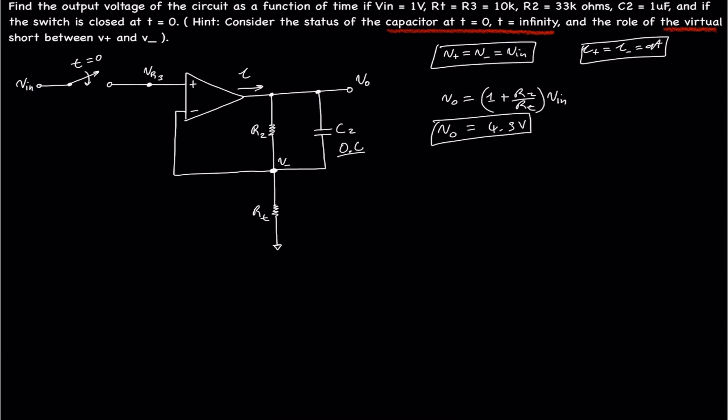We know that Vout equals 4.3 volts will be the voltage when the capacitor is fully charged. And we know we want the output voltage as a function of time. Thus, we can say that Vout with respect to t is equal to Vin, which is 1 volt, it's fixed, times e to the t over RC. And that's R2, C2.